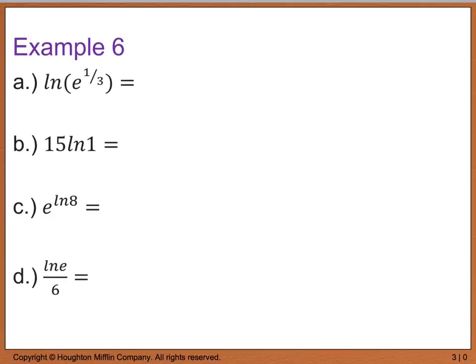For example 6, let's simplify these. Right away, I see that I'm taking the natural log of e, so those cancel out and that leaves me with just 1 third. For part b, I have 15 times the natural log of 1. The natural log of 1 is 0, so I end up with 15 times 0, which gives me 0. For part c, e to the natural log of 8: e and the natural log cancel out, leaving just 8.